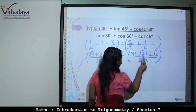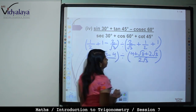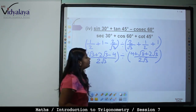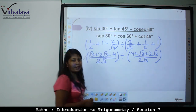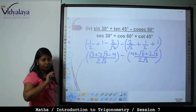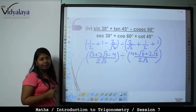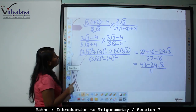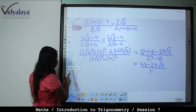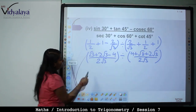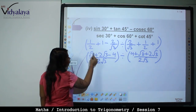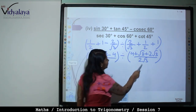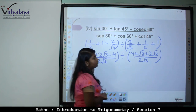Similarly for the denominator, LCM is 2 root 3, giving 4 plus root 3 plus 2 root 3. Change division to multiplication — the denominator numerator swaps. Take root 3 common from both: numerator becomes 3 root 3 minus 4, denominator becomes 3 root 3 plus 4. The 2 root 3 terms cancel.